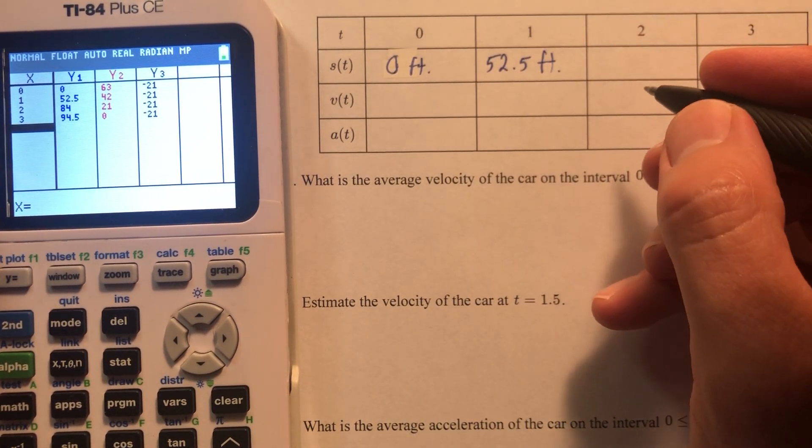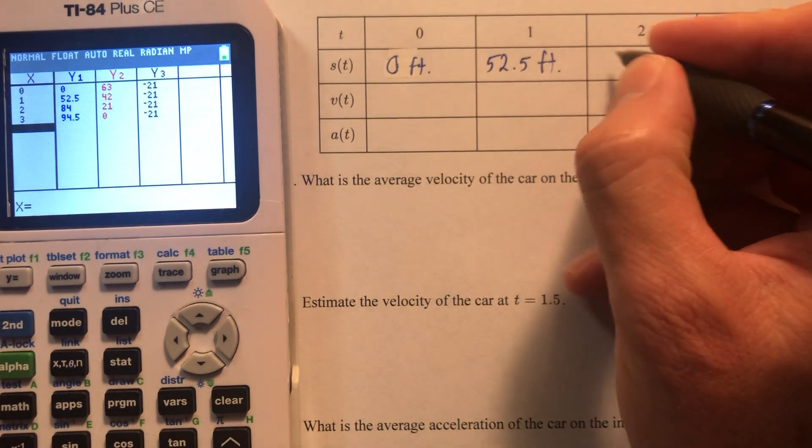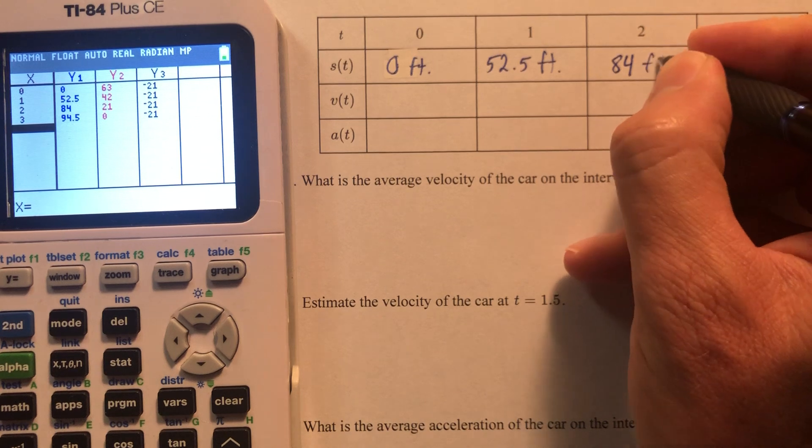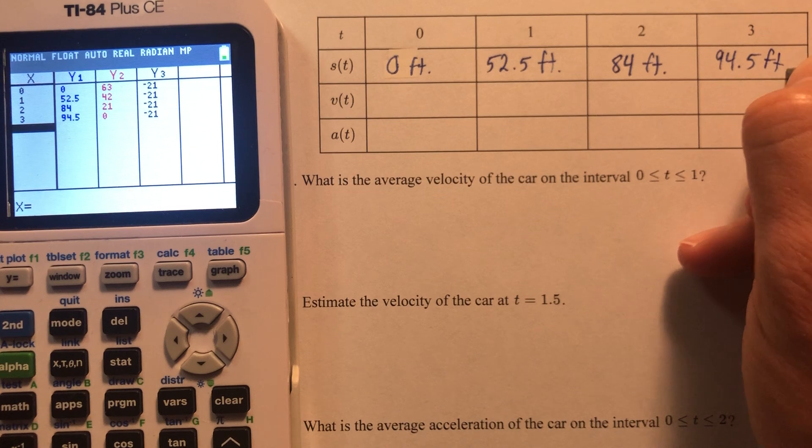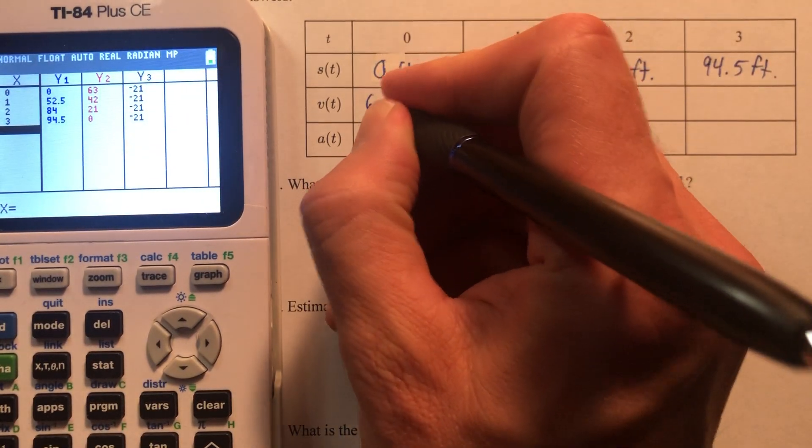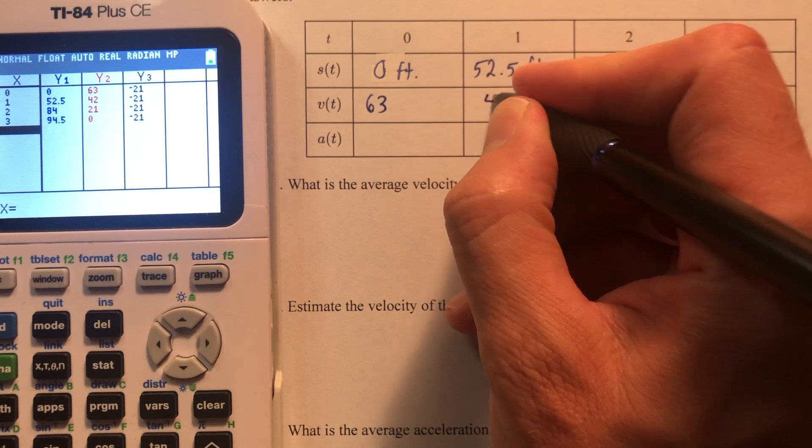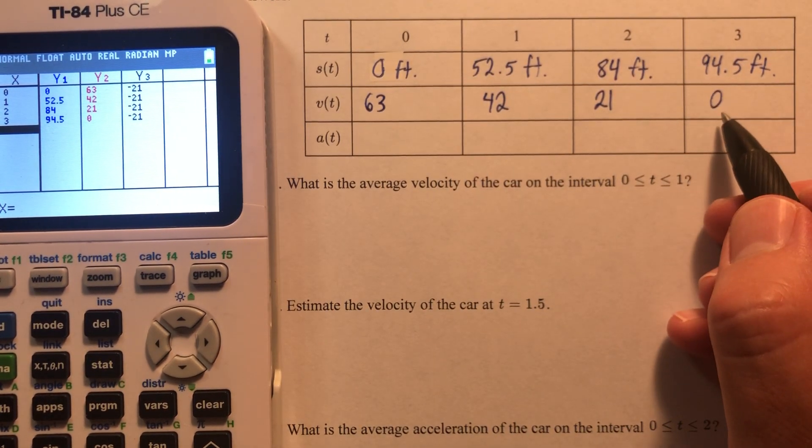At t equals 2, the car has traveled 84 feet from its starting position and then 94.5 feet from its starting position. So now we're going to deal with the velocity, which is 63, 42, 21. You see the pattern, 0, which means the car has stopped at this point.